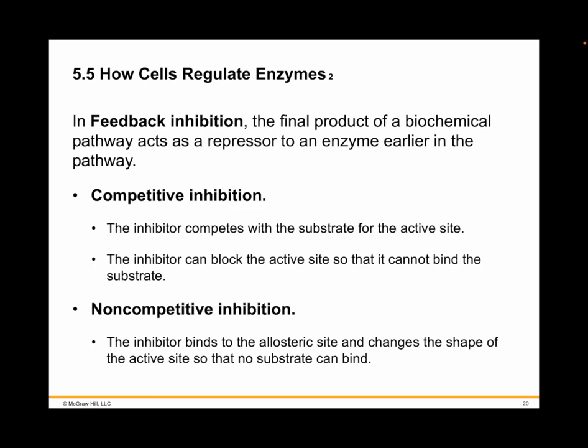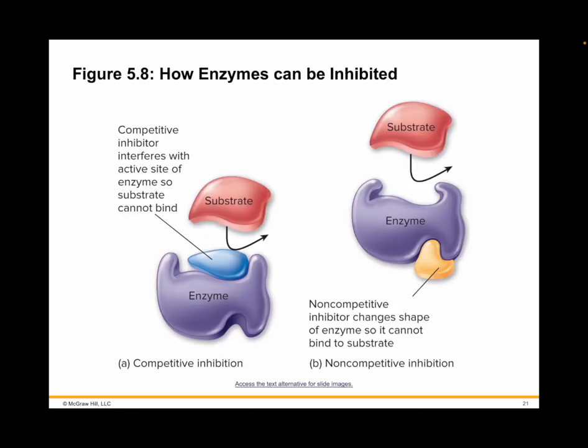Now let's get to ATP, the energy currency of the cell. Figure 5.8A shows competitive inhibition — the blue molecule at the active site has competed for it and won. On the right-hand side, the yellow molecule shows non-competitive inhibition — bound to a site other than the active site, rendering the enzyme inactive at that moment.